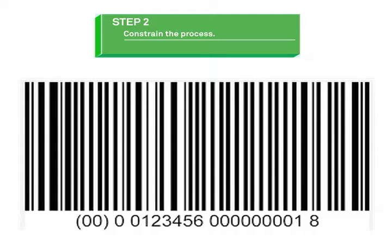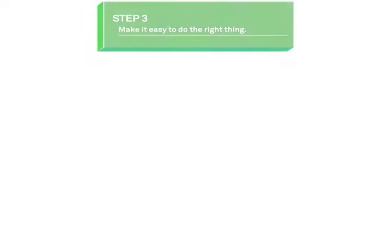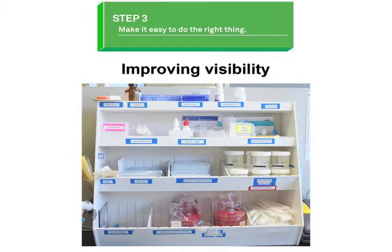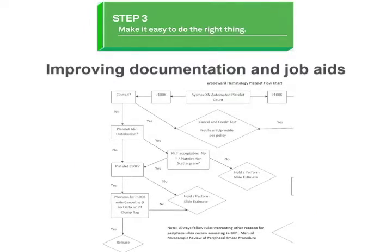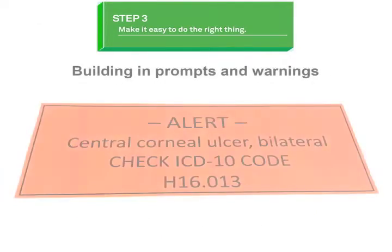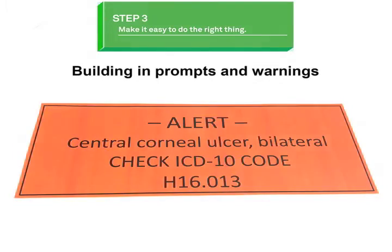If the step can't be eliminated, and if the process can't be constrained to prevent mistakes, a third option is to make it easy to do the right thing. There are many techniques that can accomplish this — for example, improving visibility, improving documentation and job aids, and building in prompts and warnings.